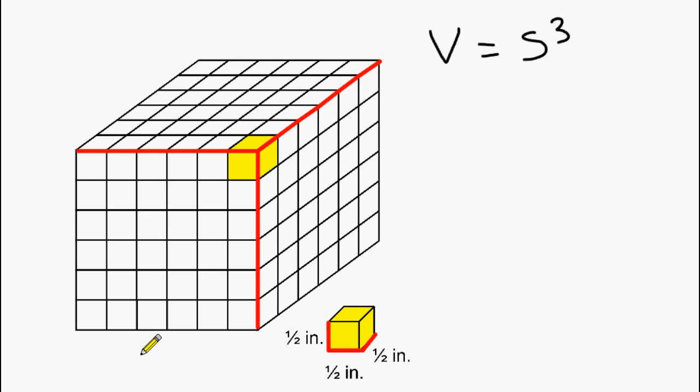Now that we know that the edge length of our larger cube is exactly three inches, we can use this information to figure out what the volume of our cube actually is. So in our formula, we are going to substitute the variable s with three and raise that to the third power.